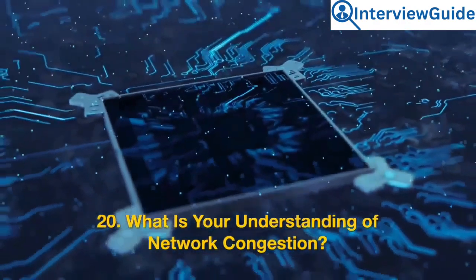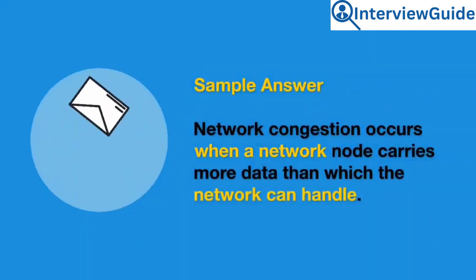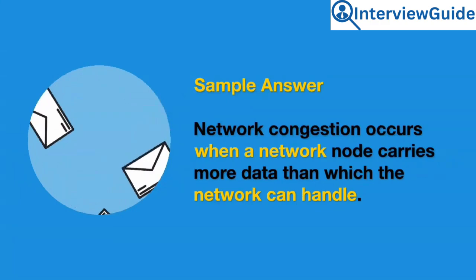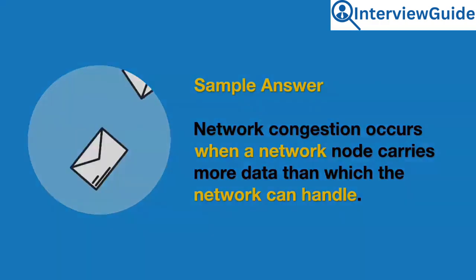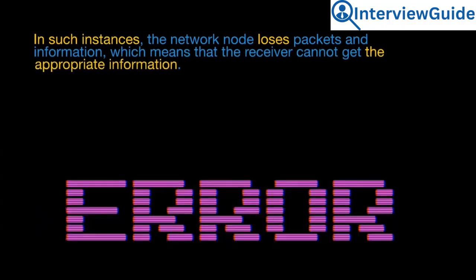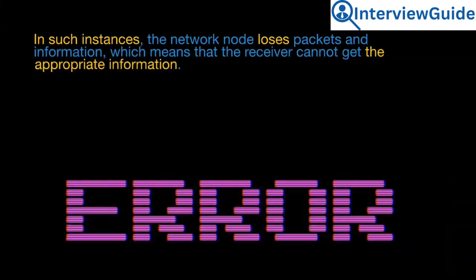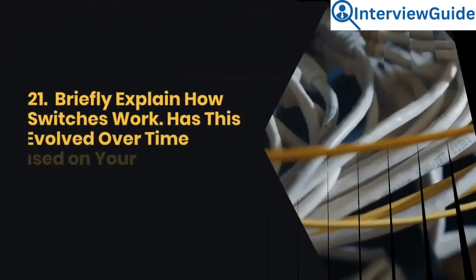Question 20: What is your understanding of network congestion? Network congestion occurs when a network node carries more data than the network can handle. In such instances, the network node loses packets and information, which means that the receiver cannot get the appropriate information.